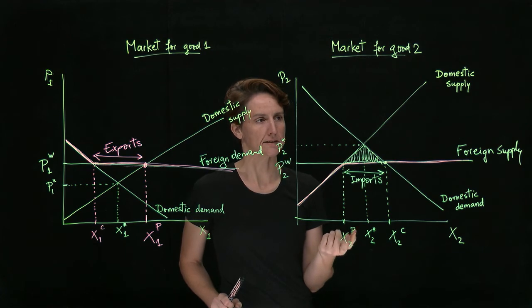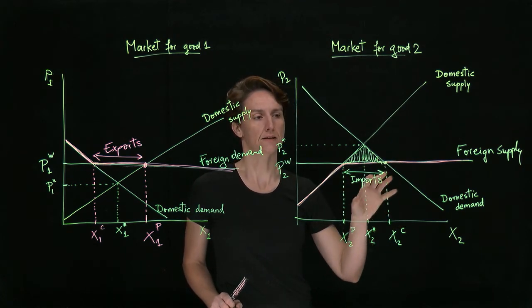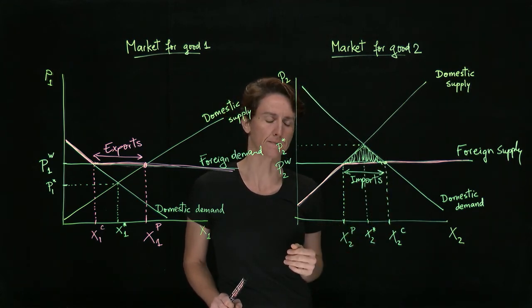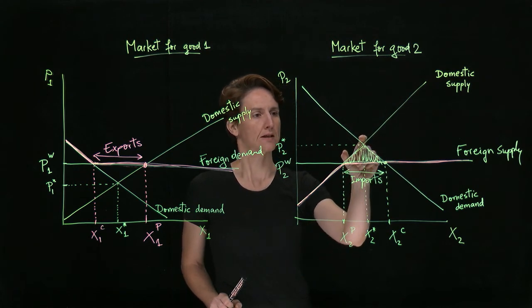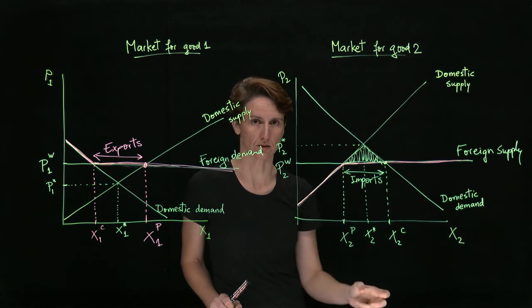Another way you can look at it is that if you're starting from a free trade case and then you cut off imports, once you close off the country to trade, this will be surplus that's lost. That will be a type of deadweight loss.